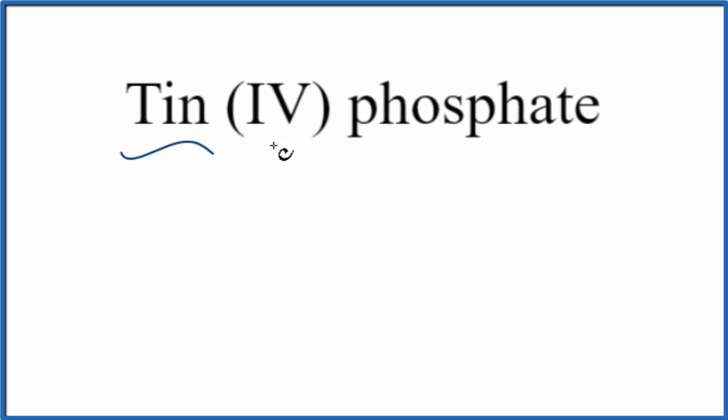In this video, we'll write the formula for tin (IV) phosphate. The first thing we need to realize is that we have a transition metal here, which is important, and then we have a polyatomic ion, the phosphate ion.